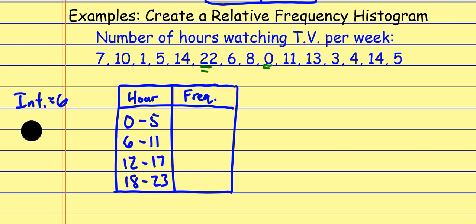Now counting up the frequencies: 0 to 5 has 6 data values; 6 to 11 has 5 data values; 12 to 17 has 3 data values; and 18 to 23 has just 1 data value. I mark off values as I go so I don't count them again.